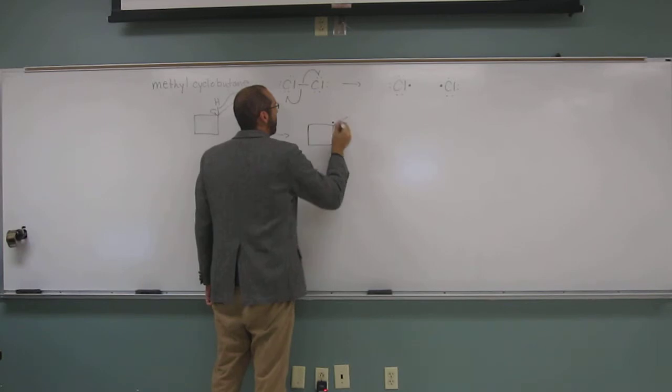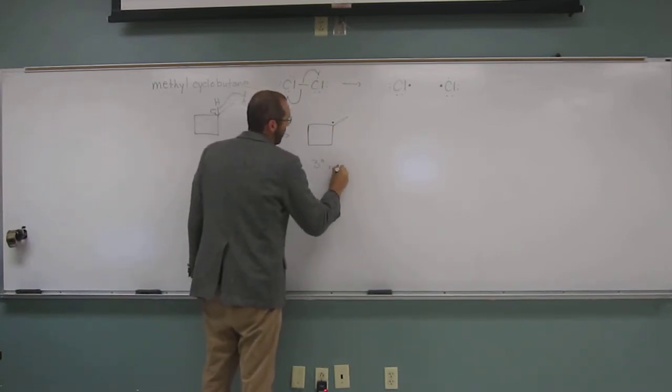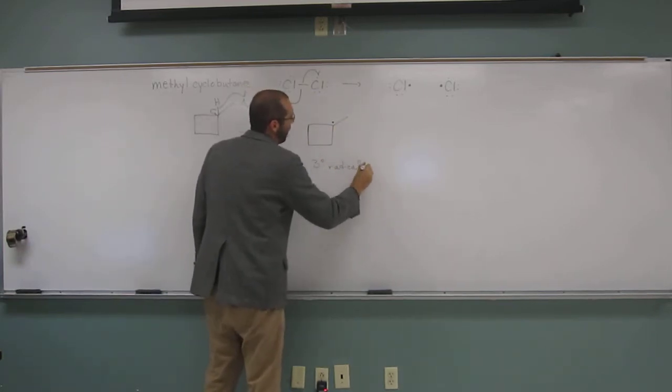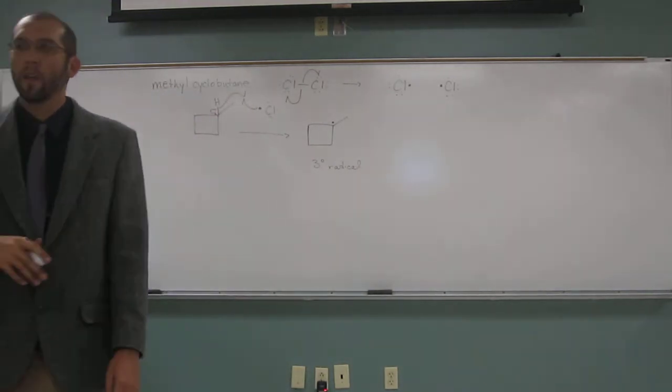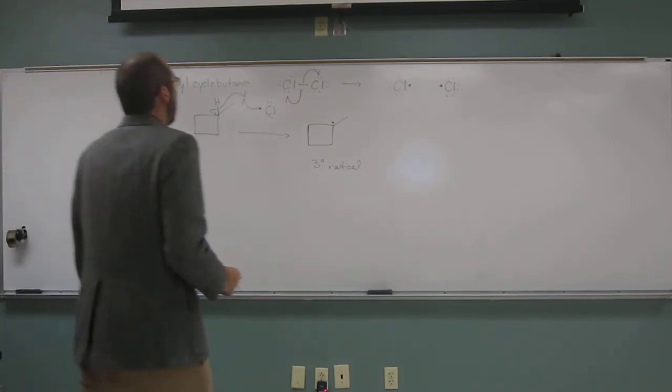So now we have, like we were saying, that tertiary radical. Most stable. Since it's going to be the most stable, that's where the monochlorination is going to go.